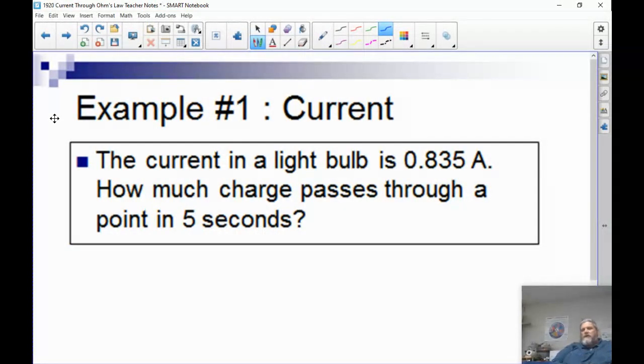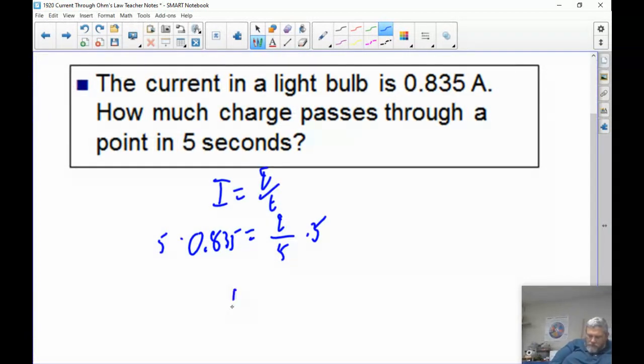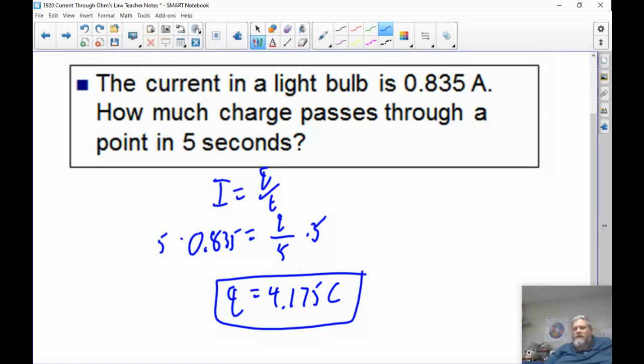Let's do a couple of examples. Current in a light bulb is 0.835 amps. How much charge passes through a point in five seconds? So we start with I equals Q divided by T, and we're going to solve for Q. So the current is 0.835, and that's equal to Q divided by 5. Now we just multiply both sides by 5, and we get Q equals 4.175 coulombs. So that's a lot of charge. 4 coulombs is what you'd get when you were struck by lightning like four different times.